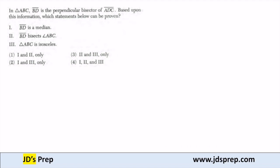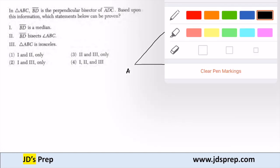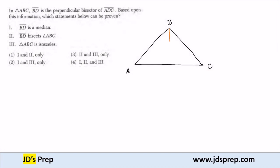So let's begin by just drawing a triangle. Visuals are sometimes helpful, and let's call this ABC. And then we're going to take BD and make that the perpendicular bisector. So let's take here, and that'll be D.